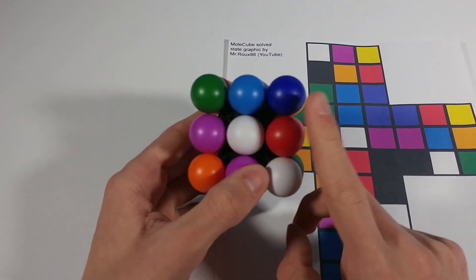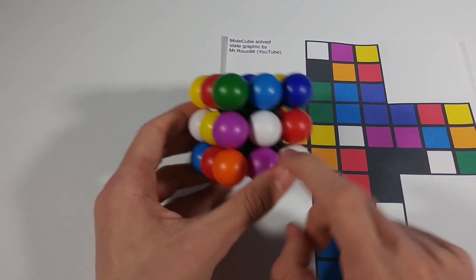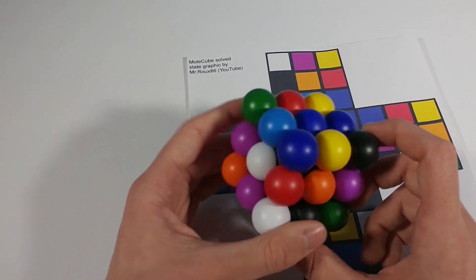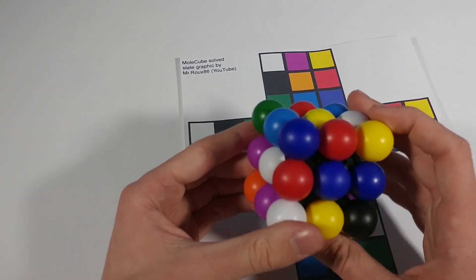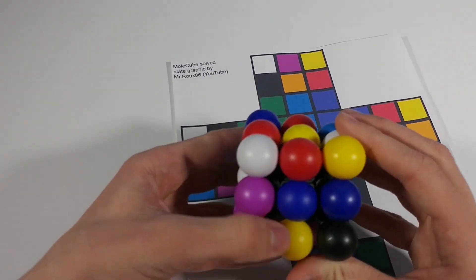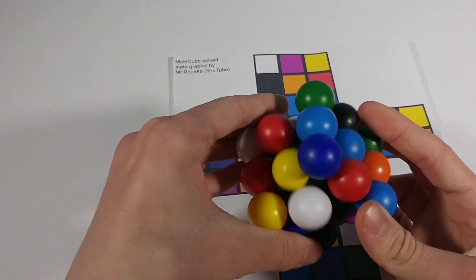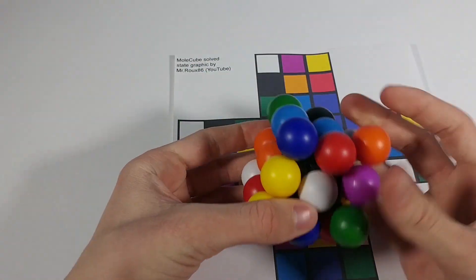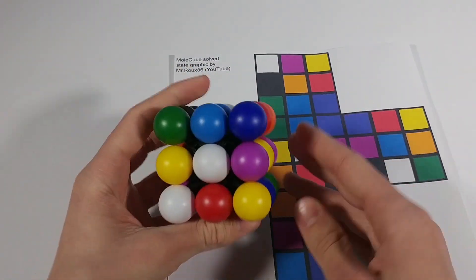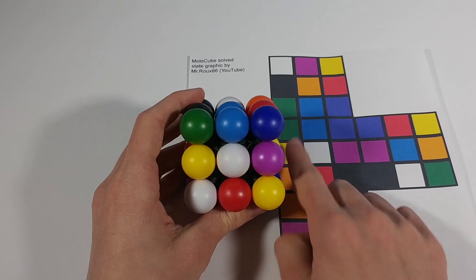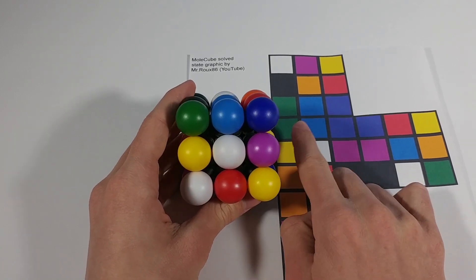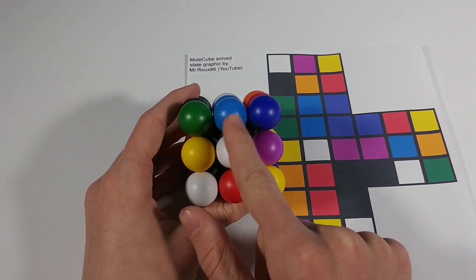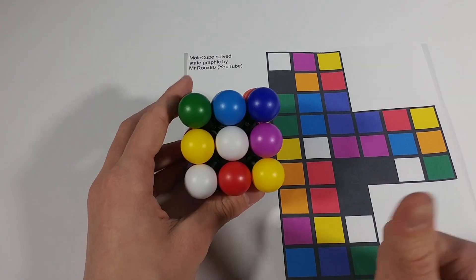Next under the dark blue I need a purple and under the green I need a yellow as pictured right here. So I can go ahead and do that. Let's just check green, light blue, dark blue, yellow, purple, green, light blue, dark blue, yellow, purple. So we're good so far.